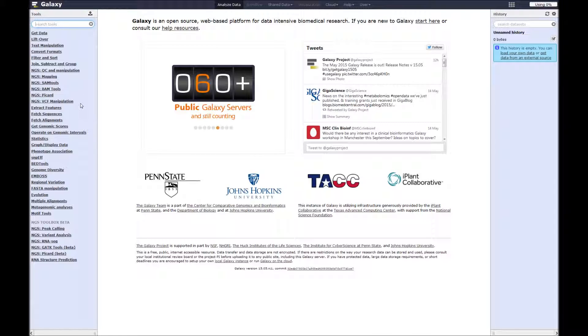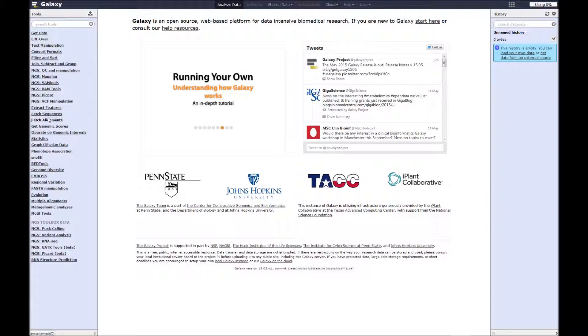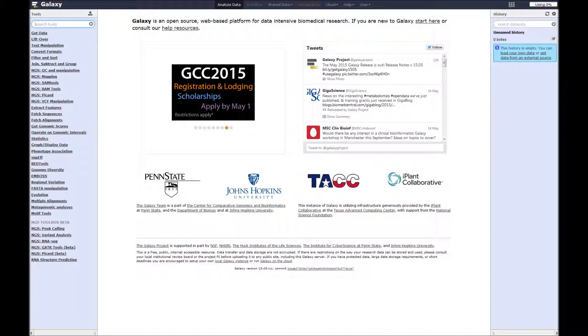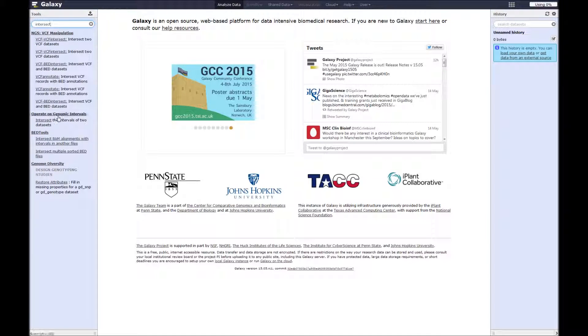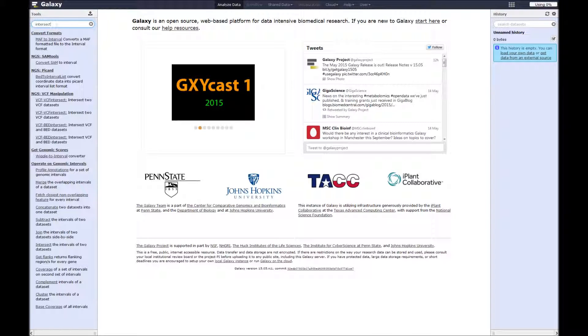Just a quick mention about the tools menu. Each of these links opens up to lots of different tools. So it can be quite daunting to find the thing you actually want. There's this search bar here. Say you wanted to intersect two data files or records. You could start typing intersect here. And after it thinks a little it will come up with all the tools that have intersect in their name. For example here we have operate on genomic intervals and we have intersect the intervals of two data sets. This can be quite handy if you're not sure where a particular tool lives.